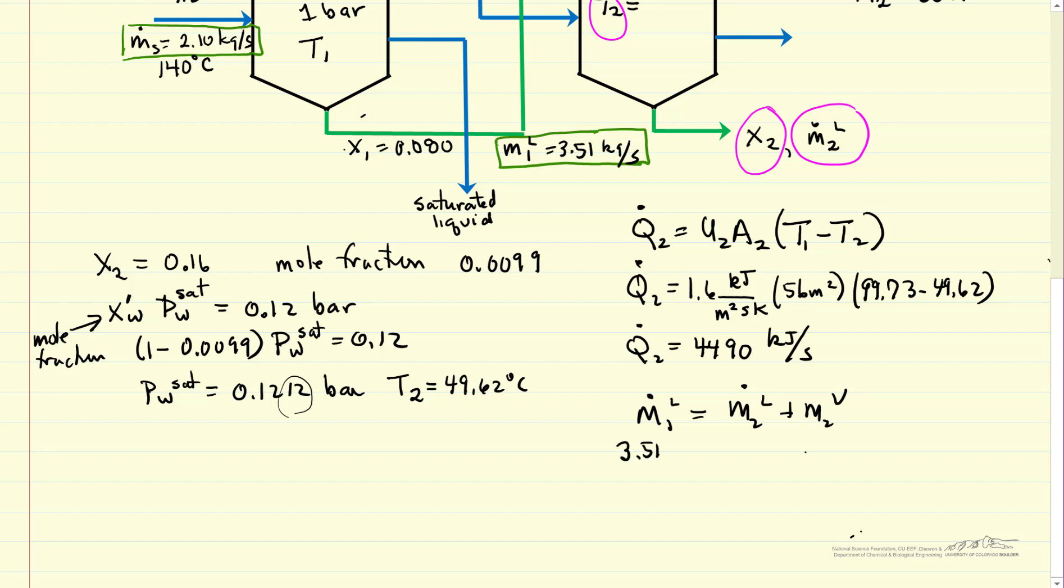And so this value we know, 3.51 kilograms per second, that's what we calculated in the previous screencast. And I've rearranged it to solve for mass flow rate of liquid, use that to eliminate in the energy balance so that I can end up solving for mass flow rate of vapor, and then I can go back and get the mass flow rate of liquid.